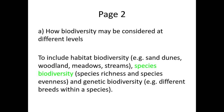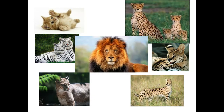Species evenness is measured using the Simpson's Index of Diversity, which is covered later on within the biodiversity topic. Species richness is literally just the number of species within an area. So for example, if we look at the image, we have one, two, three, four, five, six, seven — seven would be our species richness. We have seven different species on that image.